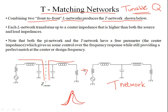By changing the center frequency, as discussed with pi networks, each L network transforms up to a center impedance — and the similarity with the pi network is that each L network transforms up to a center impedance.